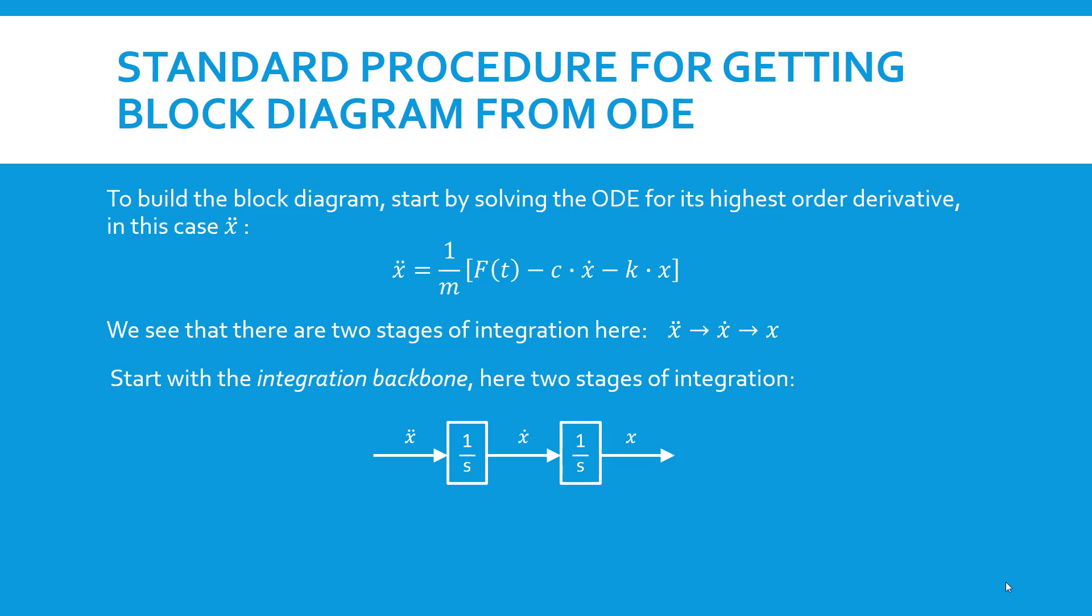Our starting point is to set up something that I call the integration backbone of the system. We have these two stages of integration, so we lay them out. One over s is the Laplace transform version of the integral operation. So we send in x double dot on the left, it's integrated up to x dot and then that's integrated up to x. These are all quantities that are in the equation, so we shall need them as we build a block diagram.